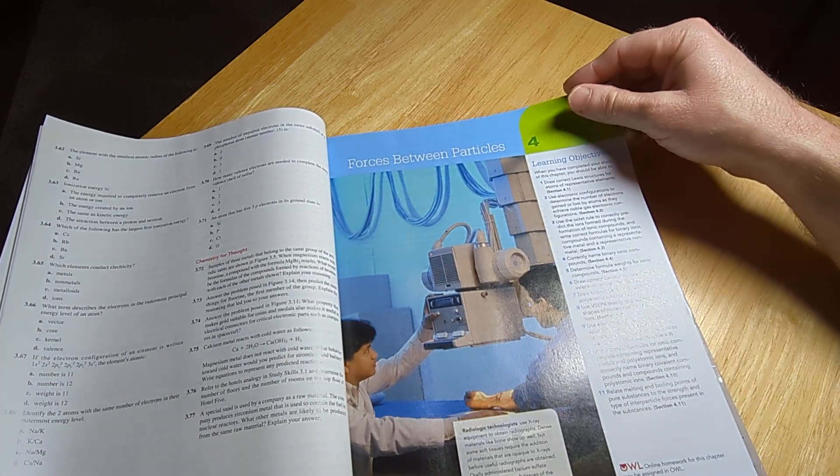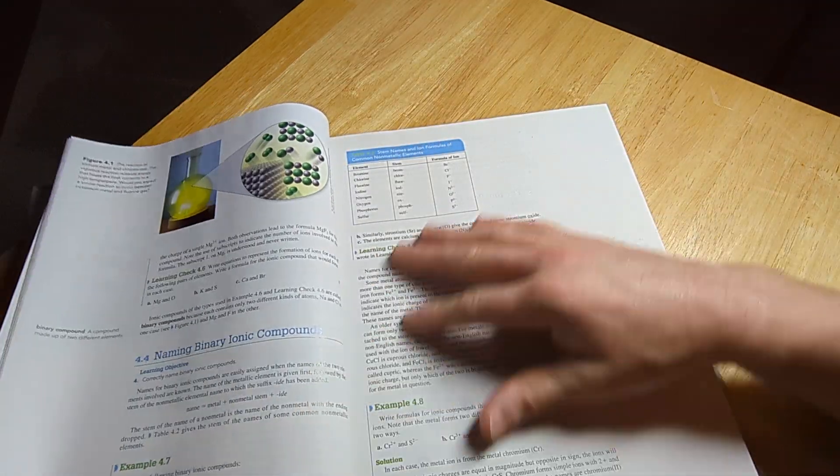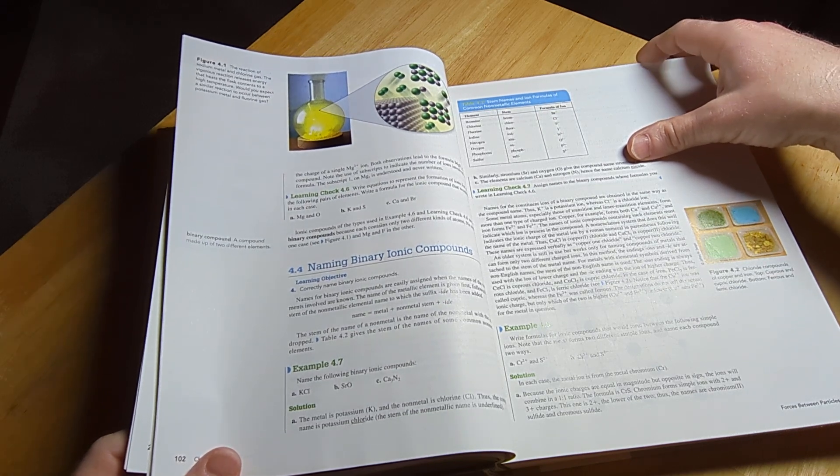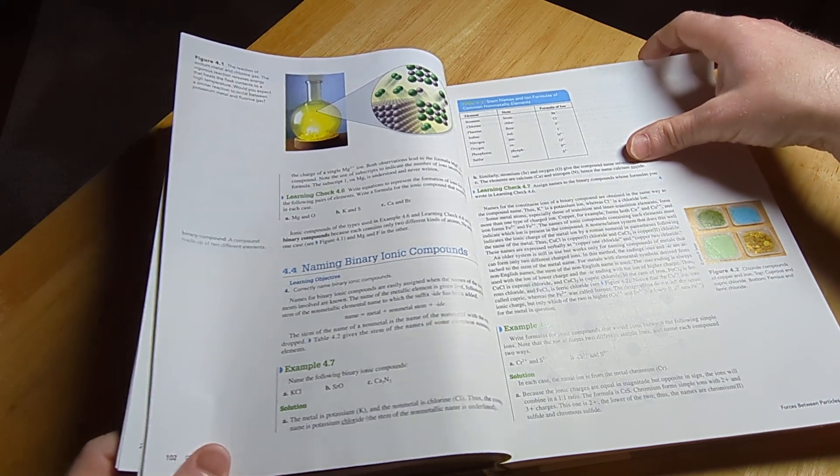Forces between particles. Yeah, all kinds of stuff here. Naming binary ionic compounds. Name the following binary ionic compounds.